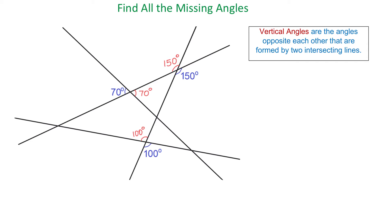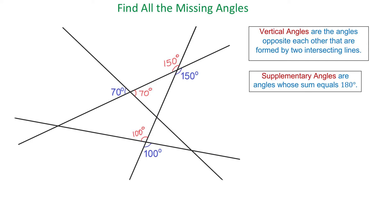Now let's review the definition of supplementary angles. Supplementary angles are angles whose sum equals 180 degrees. The angle of 70 degrees and this angle are supplementary angles because together they form a straight angle which measures 180 degrees. So if this angle is 70 degrees, then this one will be 110 degrees. And if this angle is 110 degrees, then this one is also 110 degrees because they are vertical angles.